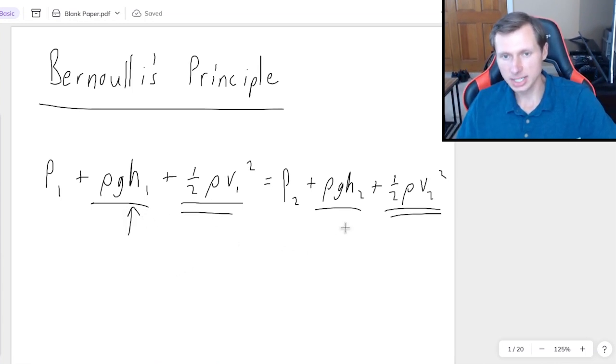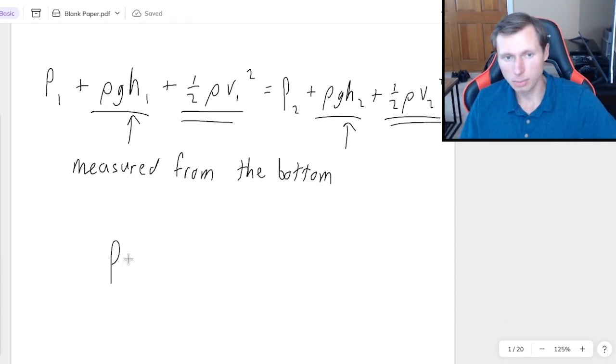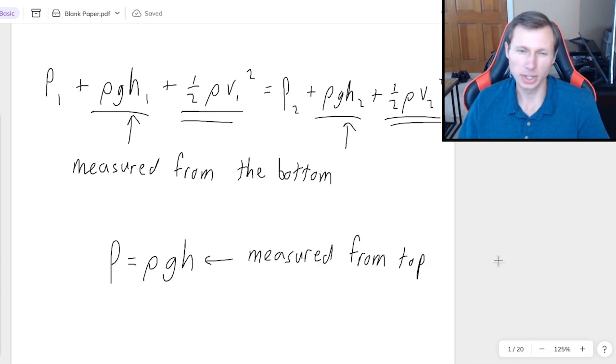Number one, this height, well both of these heights, are measured from the bottom. They are measured from the bottom. And that's significant, because if you think of the other pressure equation, pressure equals ρgh, which I cover in a different video, this height is measured from the top. And I don't really have a good reason as to why that is, but just memorize it, and you'll be fine.